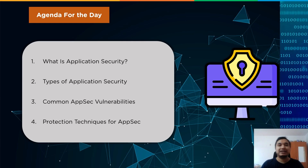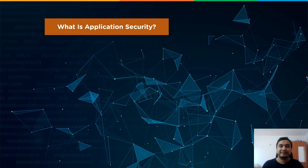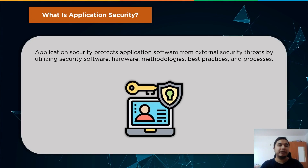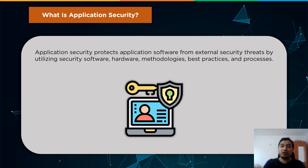Let's start by learning about application security from a grassroots perspective. Application security, which is often known as AppSec, protects application software from external security threats by utilizing security software, hardware, methodologies, best practices, and different processes. Organizations require application security technologies that safeguard all of their programs, from internal to popular external apps on consumer mobile phones.